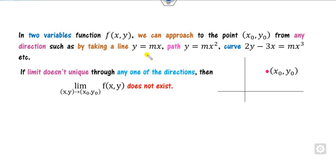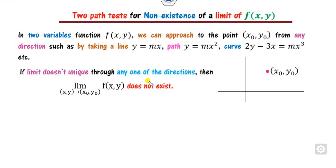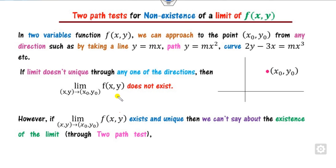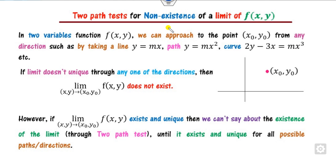Our target is to check the limit along each path. If the limit does not exist along any direction or path, we say the limit of the two-variable function does not exist. This is called the two-path test for non-existence. Remember: if the limit is not unique, the limit does not exist. However, if the limit exists and is unique along one path, we cannot conclude about the existence of the limit, because this test is only applicable for proving non-existence. The limit must exist for all possible paths and directions.